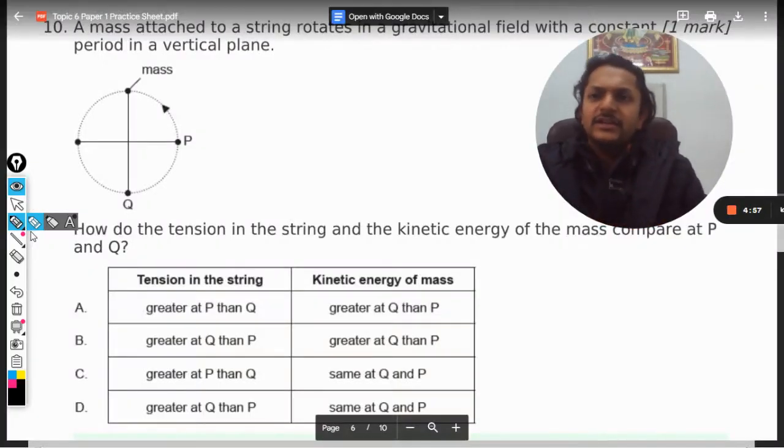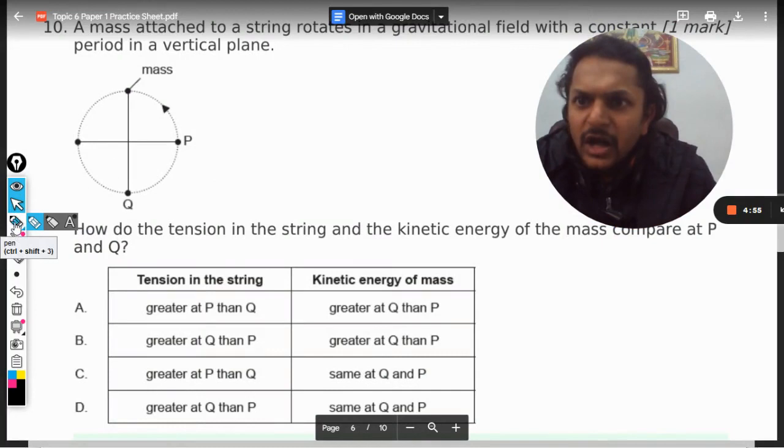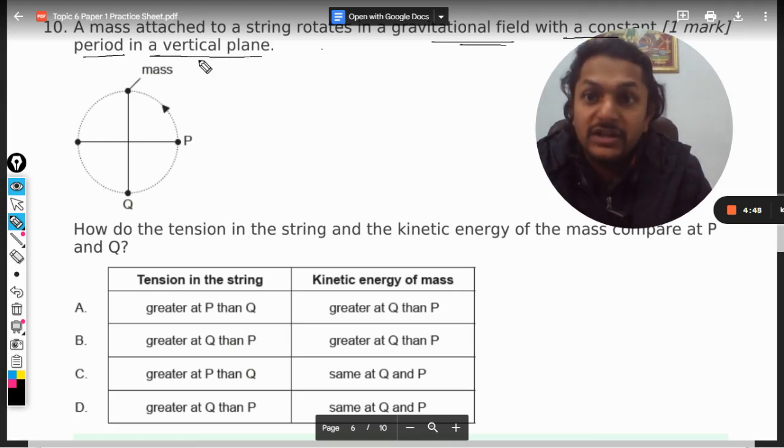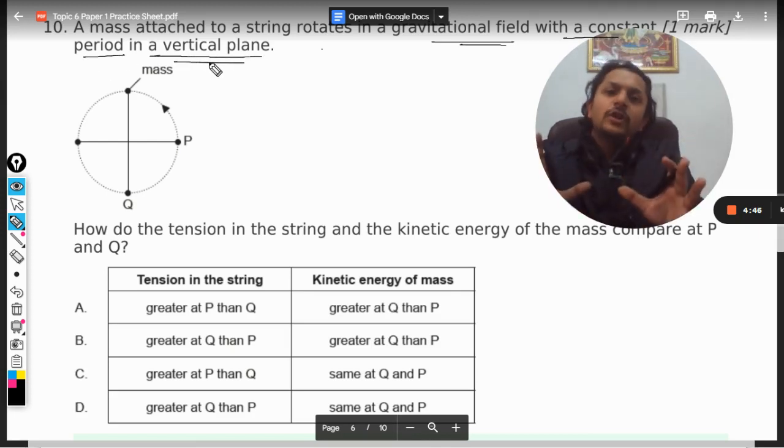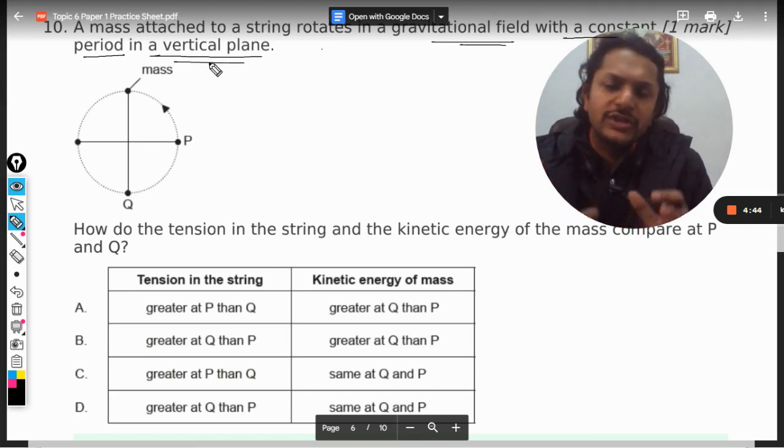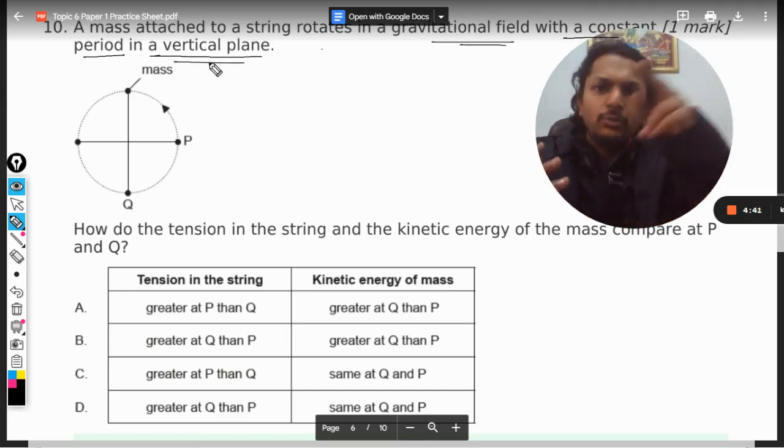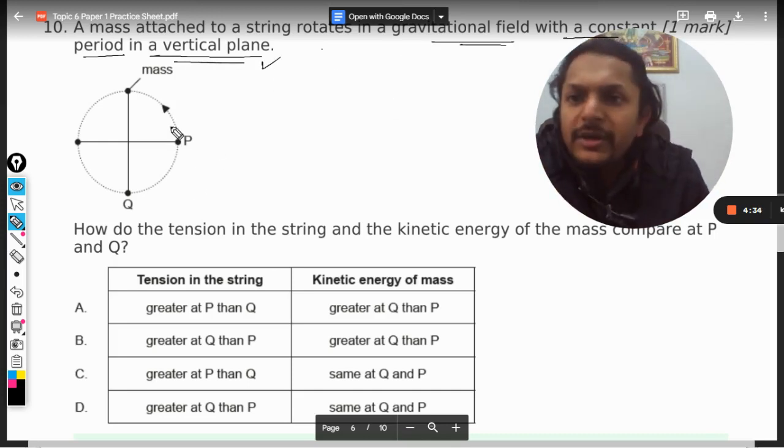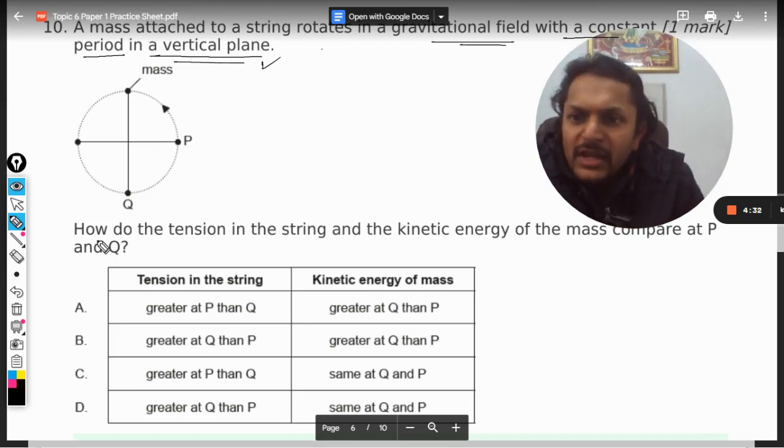Okay, dear students, let's see this question. A mass attached to a string rotates in a gravitational field with a constant period in a vertical plane. The time period is constant, so you're supposed to neglect losses. It keeps moving in a vertical circle. How do the tension in the string and the kinetic energy of the mass compare at P and Q? This is point P and this is point Q.